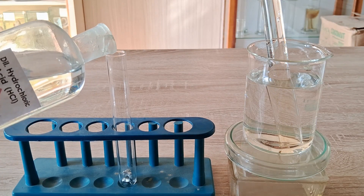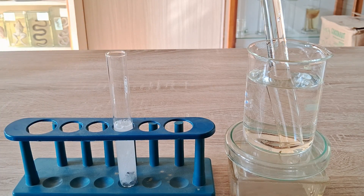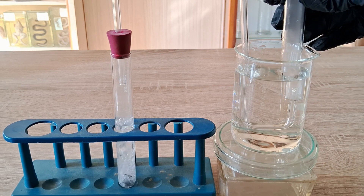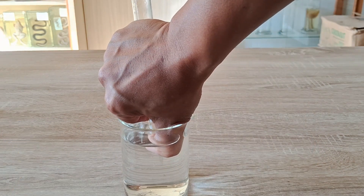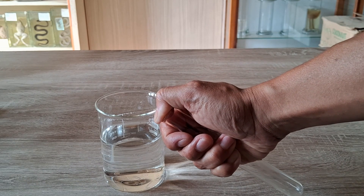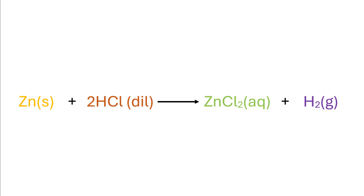As you add acid to the zinc, a violent effervescent reaction occurs and bubbles are released from the surface of the zinc metal. The gas bubbles begin to collect in the test tube in the beaker. Allow the gas to completely fill the test tube, then remove it from the beaker while covering its mouth with your thumb. Bring a burning splint close to the mouth of the test tube — the gas ignites with a pop sound, confirming it is hydrogen gas.